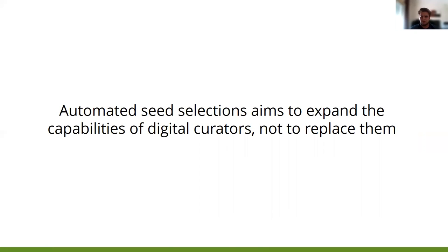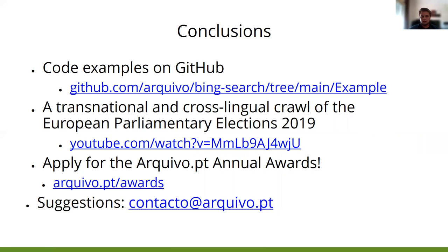The purpose of this process is not to replace the work of human curators, but rather to increase their responsiveness given the large amount of information currently being produced. Some conclusions: the code for the examples is on GitHub. We also did a transnational and cross-language crawl of the European Parliament Elections from 2019 — if you want more information, you can check the presentation at the YouTube link. We also applied automated selection in this project. Finally, if you do research based on this collection or other collections from Arquive.pt, you can apply to the Arquive.pt annual awards. If you have any suggestions, please send us an email. Thank you.